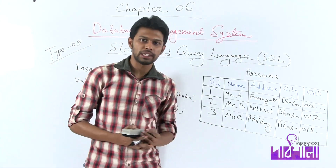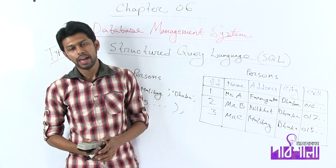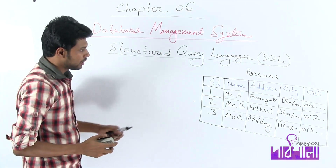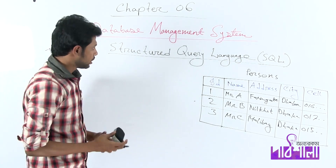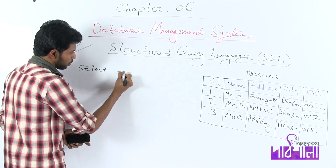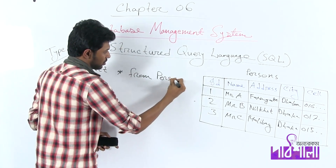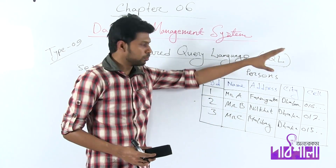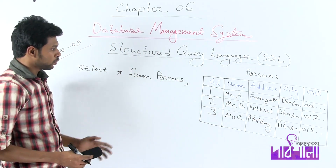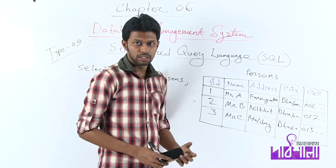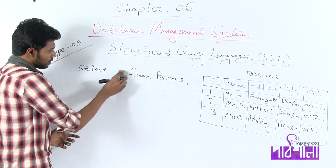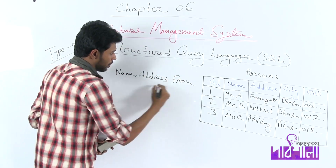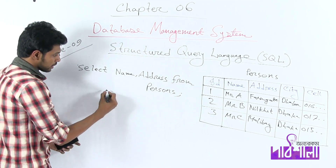Now we will create a table and insert data using the INSERT statement. We will see that the data is already inserted. Suppose you want to see the persons table. If you want to see this table, use SELECT * FROM persons. If you run this, you will see the table — it has columns and three rows.